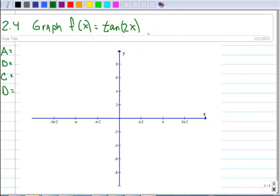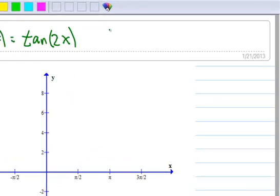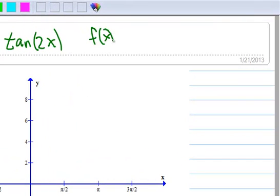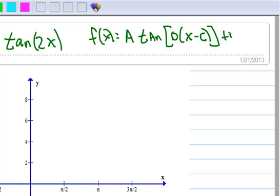Just like in sine and cosine, the standard form looks like this, it's the same thing: A tangent, quantity B times x minus C, plus D. That's a B there.